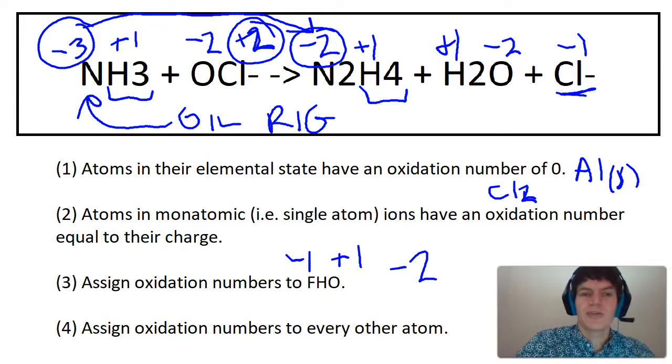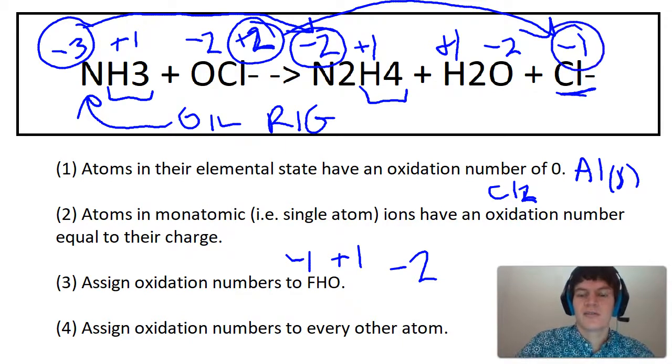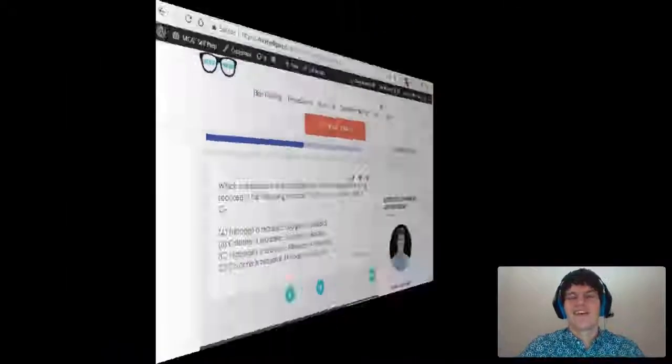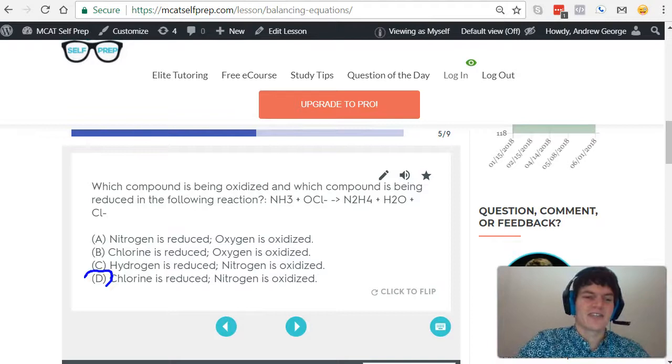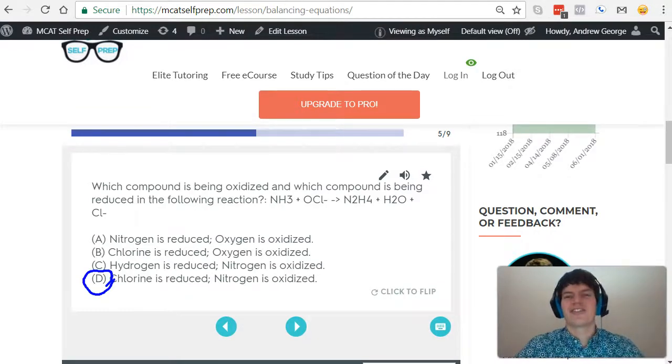And chlorine is going from plus two to minus one. It looks like it's gaining three electrons. Therefore, I would bet that chlorine is the element that is being reduced. And if we take a second look at our answer choices, it looks like D is the correct answer. Chlorine is reduced and nitrogen is oxidized.